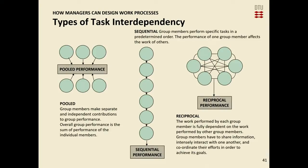You can also have different types of task dependency. There's the regular sequential production flow — one does one thing and the next one does another. But we might also have pool performance, where each of us delivers a bit and the overall performance is the sum. The reciprocal performance is quite different because each task depends on a person actually performing well, so if one performs badly it reflects on all of it.